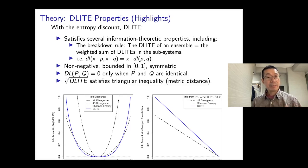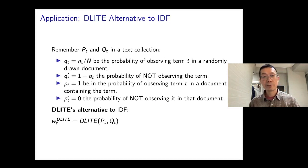In addition to that, and many other properties, D-LITE is non-negative. D-LITE is bounded in the range of 0 and 1. It is symmetric. D-LITE is 0, only when P and Q are identical. In addition, the cube root of D-LITE satisfies triangular inequality. That means the cube root is a metric distance. By comparison, the Jensen-Shannon divergence, which is another divergence, also has a similar property where its square root is a kind of a metric distance.